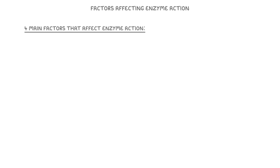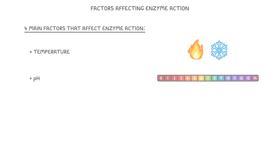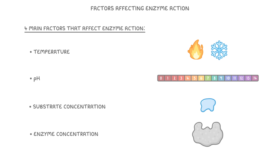In this video we're learning about the four main factors that affect enzyme action. So that's temperature, pH, substrate concentration, and then also enzyme concentration.